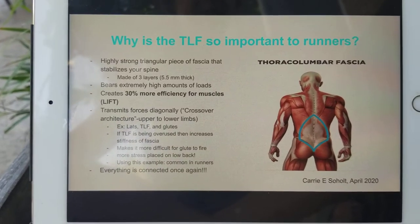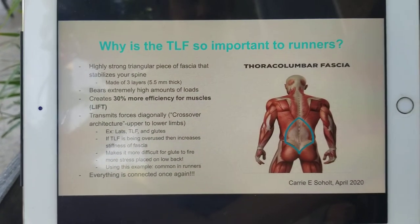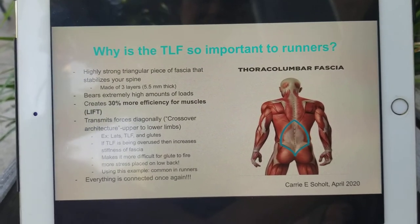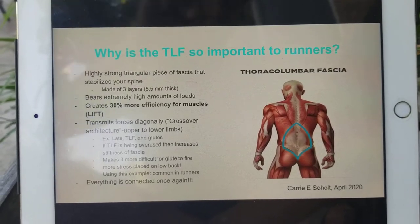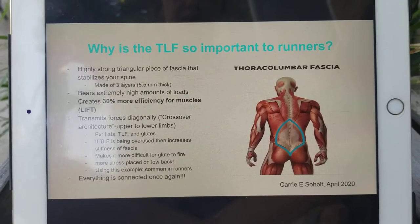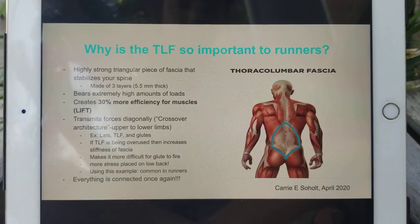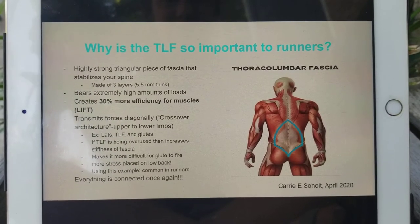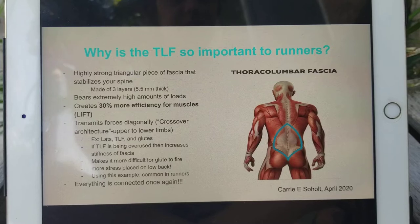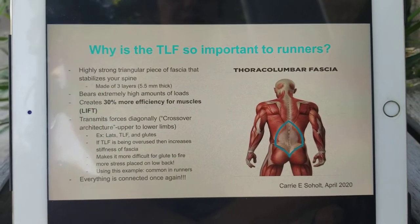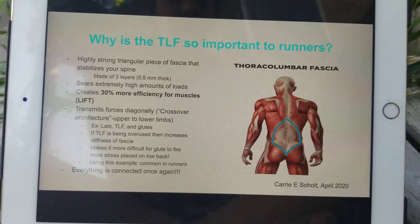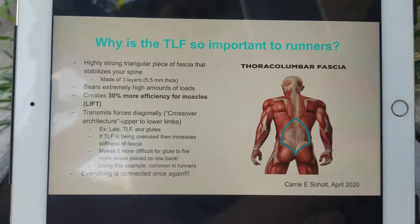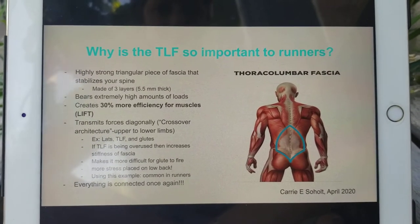So why is the TLF, or the thoracolumbar fascia, important for runners to know about? It's this triangular part circled in blue — a strong, triangular-shaped piece of fascia that stabilizes your spine. It's actually made of three different layers, each about five and a half meters thick. It bears extremely high loads and creates 30% more efficiency for muscles to work. Because it's able to carry that load, it allows your muscles to work 30% more efficiently.